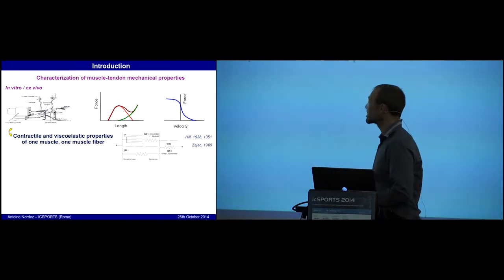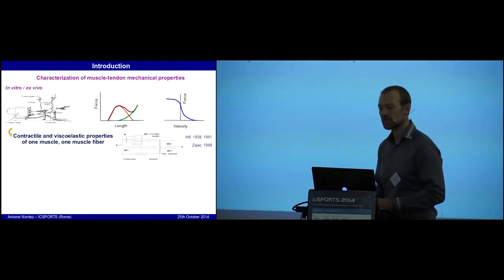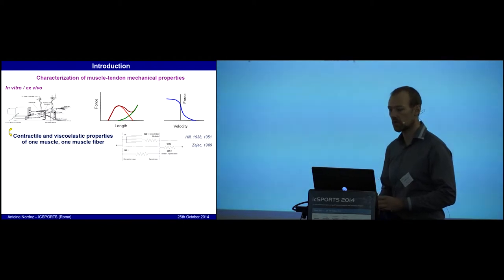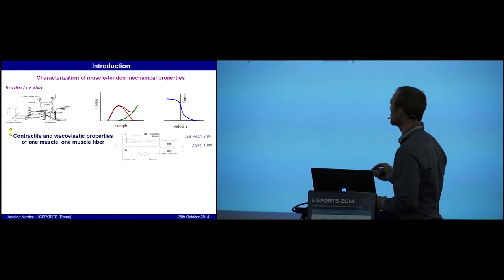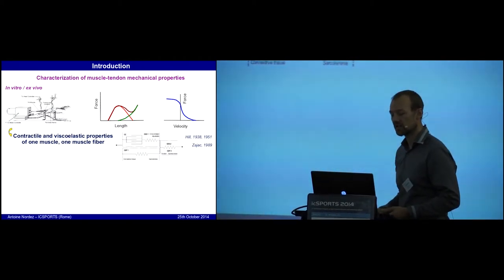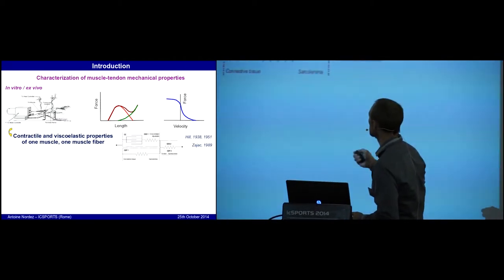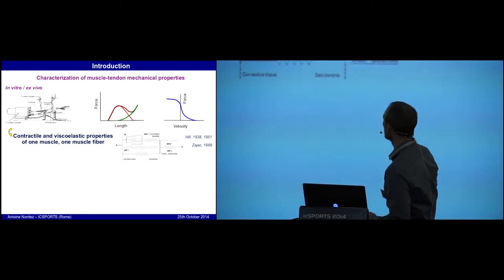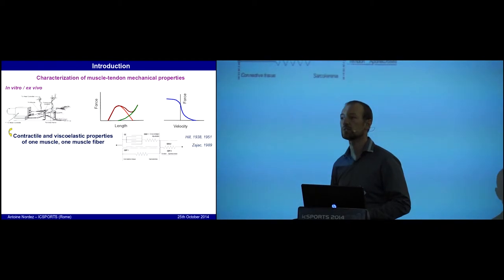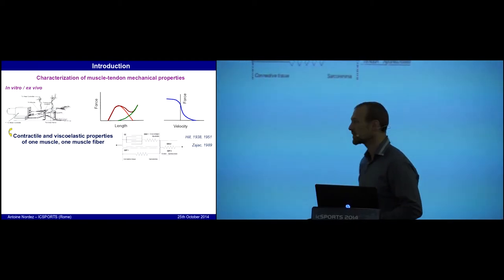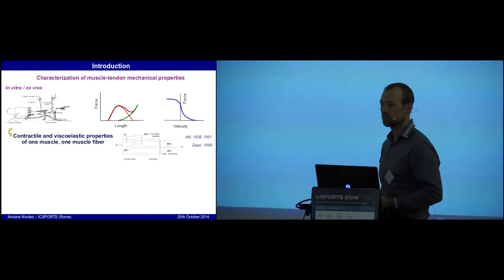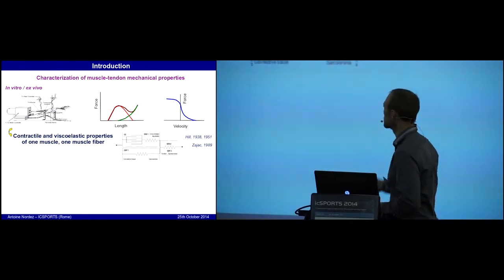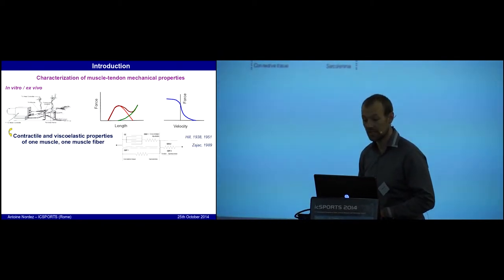Muscle biomechanics has been well described in the past, mainly since the pioneering work of Hill. It's well known that muscle force depends on muscle length and muscle shortening velocity according to the well-known force-length and force-velocity relationships. It's also well known that the muscle displays a viscoelastic behavior that can be modeled using a classical Hill-type model.